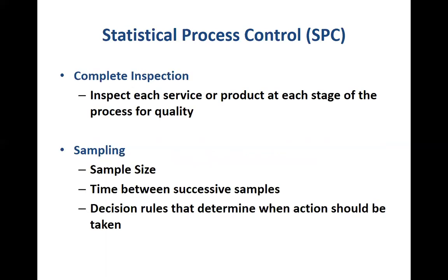We need some mechanism through which we collect data and utilize it to understand if our processes are in control. One option would be to do a complete inspection of every single thing that we make — but this is obviously expensive and time consuming. Therefore, the alternative approach would be to take a sample from the output. This random sample of a certain size can be collected multiple times over several successive samples to determine whether the processes are in control, and if not, what changes need to be made.